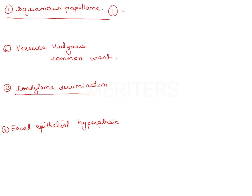Condyloma acuminatum, which appears in the options, is also known as genital warts and is caused by HPV subtypes 6 and 11. Oral lesions are acquired by orogenital contact, presenting as a broad-based verruciform lesion. These tumors grow to nearly 1.5 centimeters — larger than a papilloma — and there can be multiple lesions.